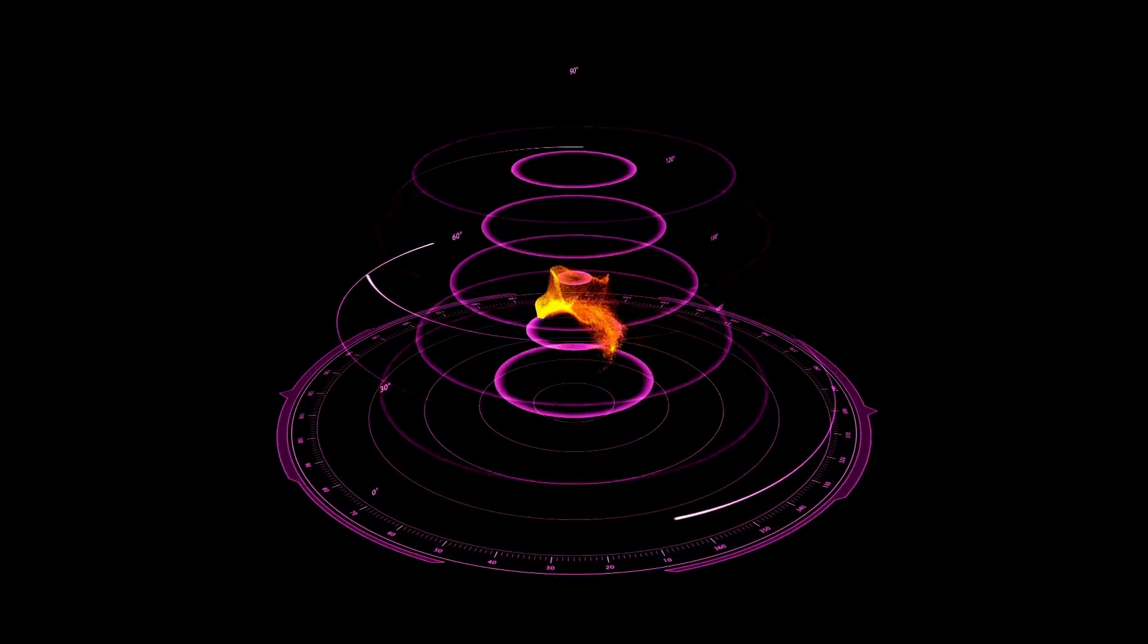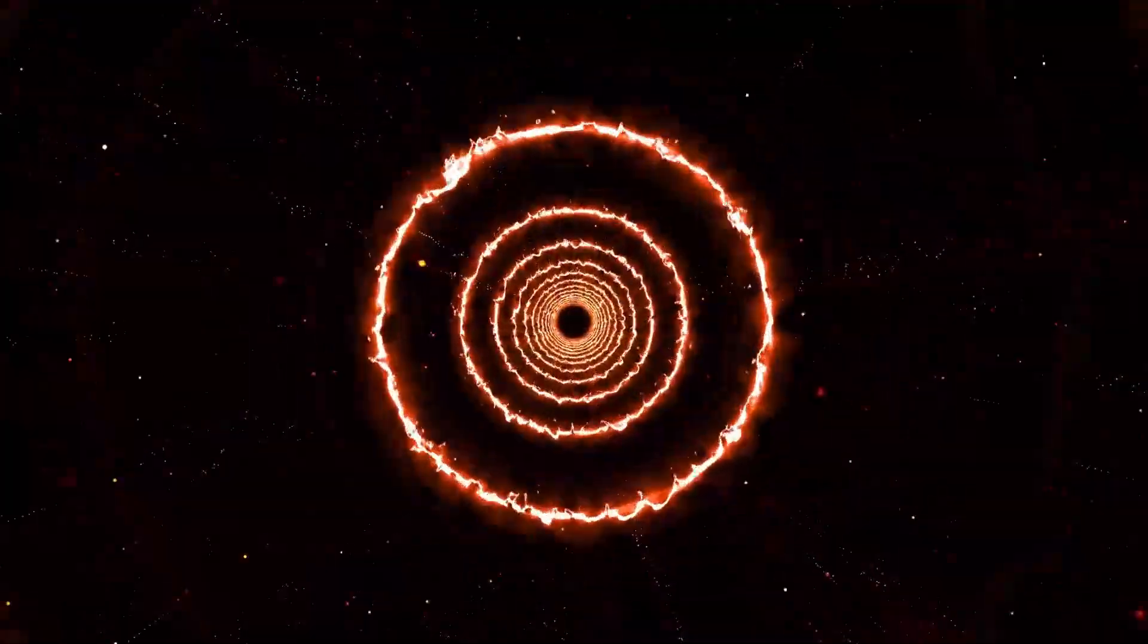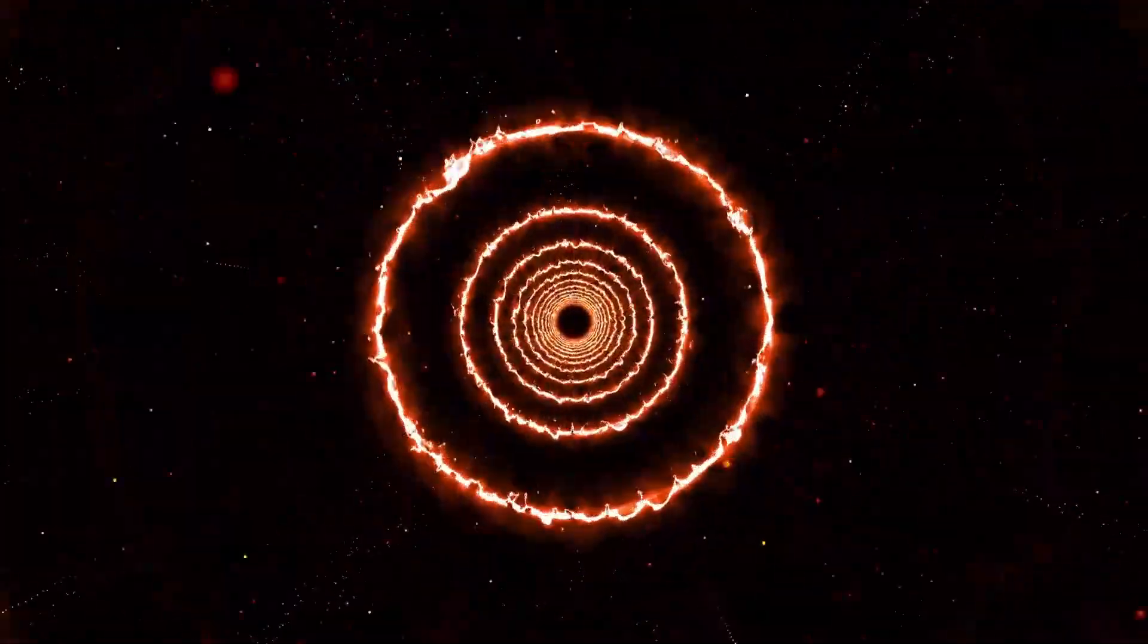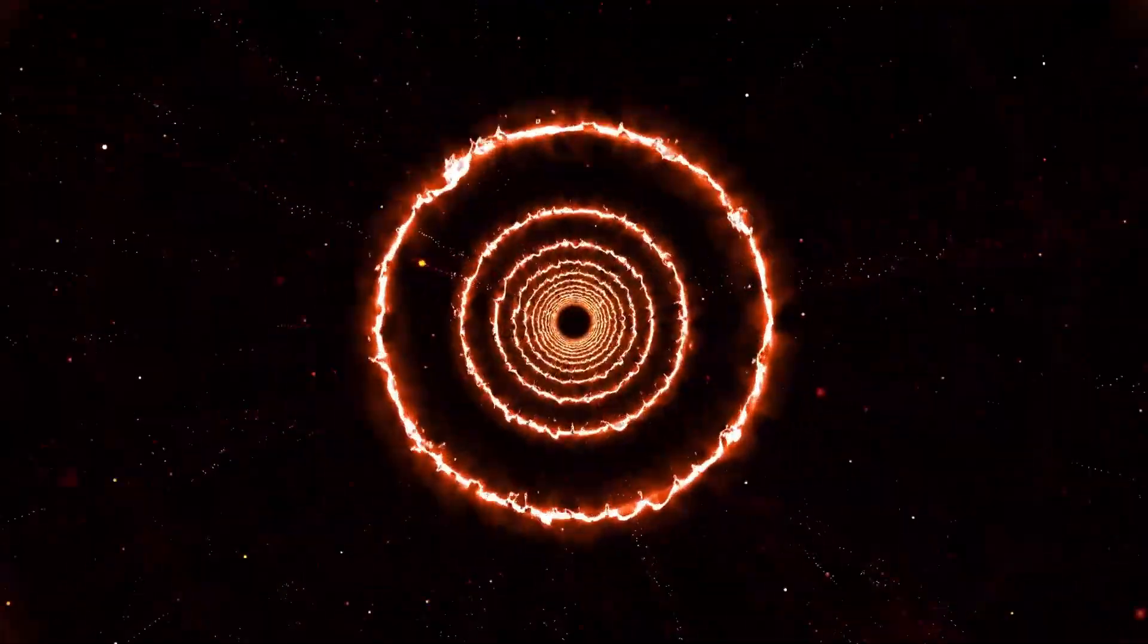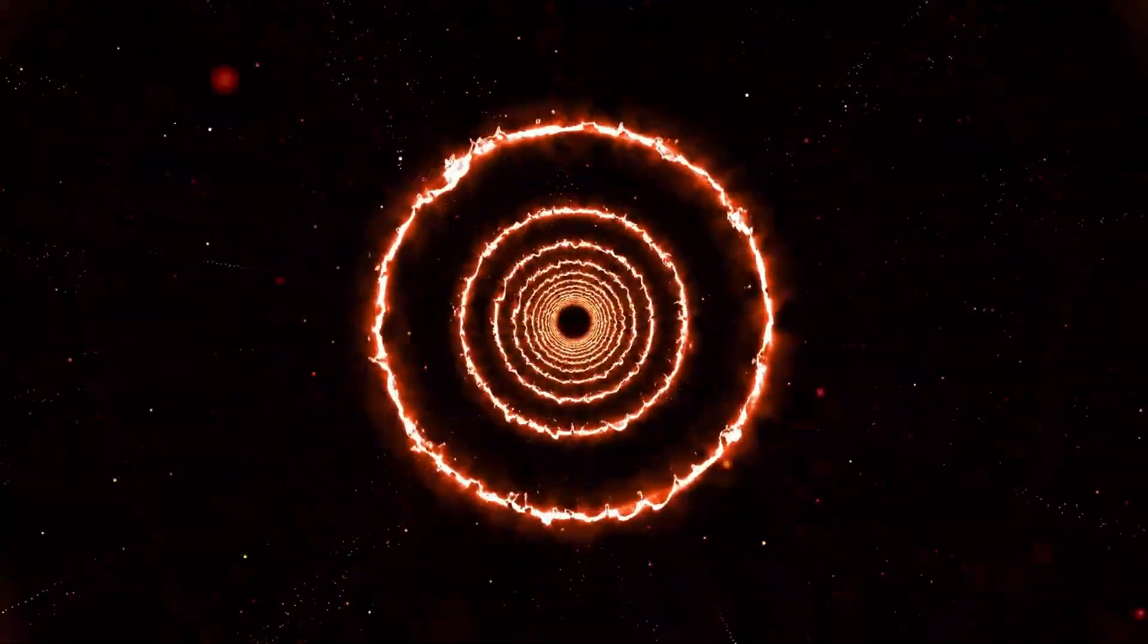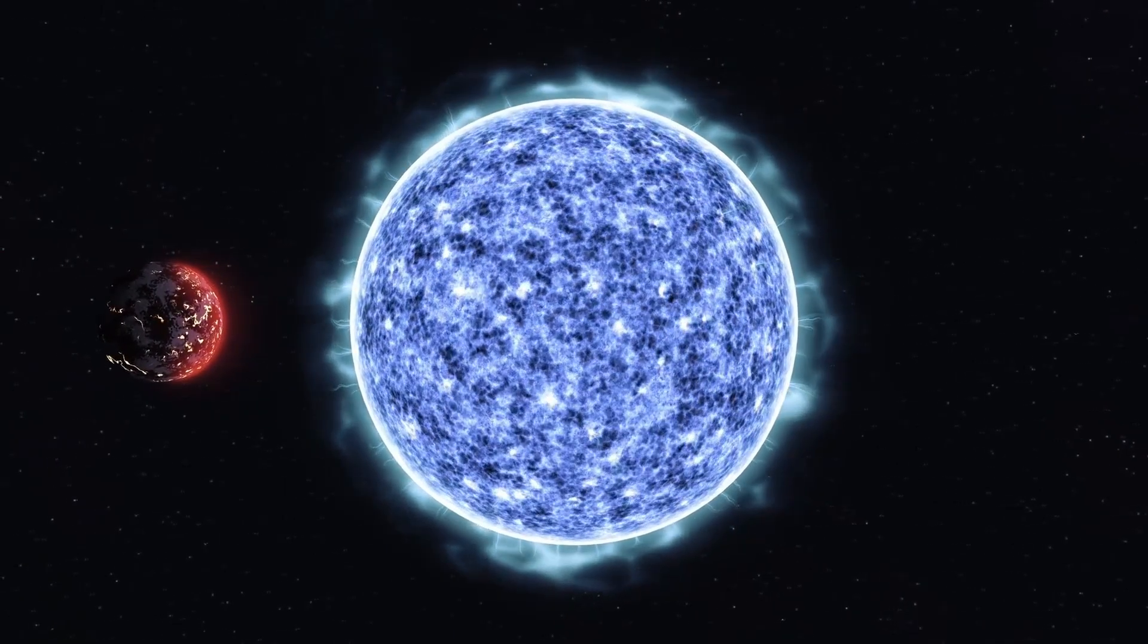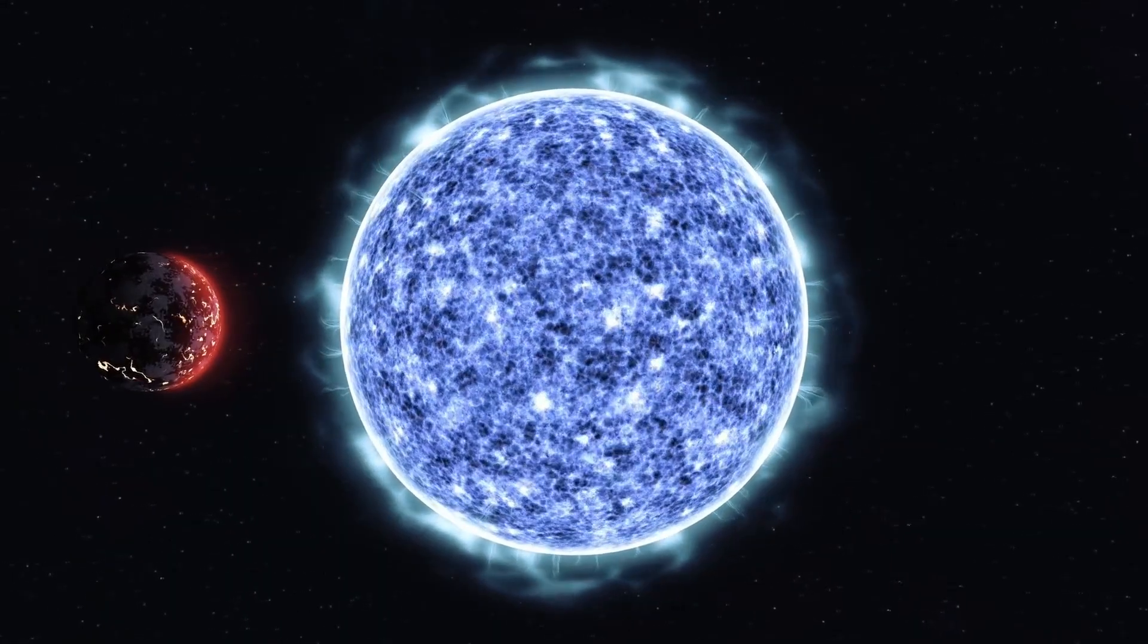The kinematics of 3I Atlas support this view. Its galactic velocity is higher than the average thin disk population, but lower than typical halo objects, placing it squarely in that intermediate range.